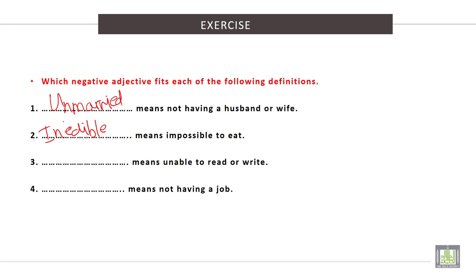Number 3: blank means unable to read or write. Someone who is unable to read or write is called illiterate. Number 4: blank means not having a job. Someone who doesn't have a job is called unemployed.